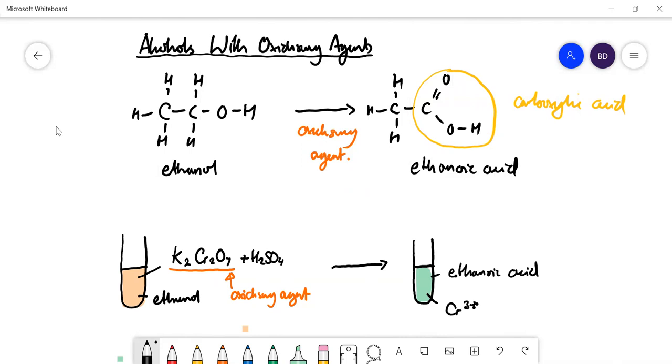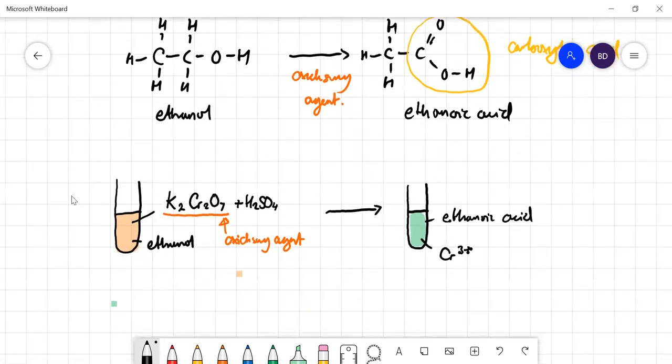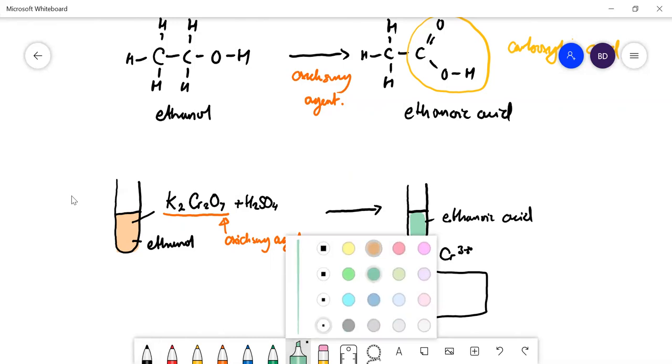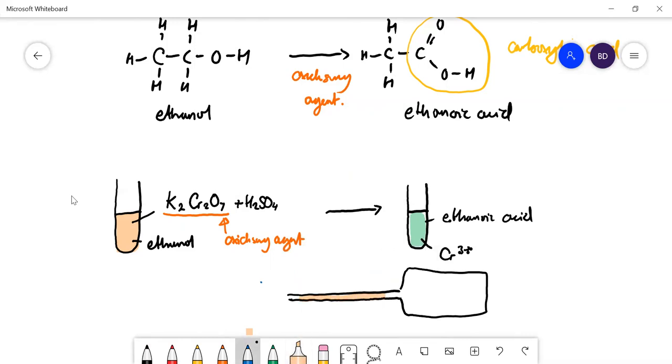You get a color change from orange to green. This used to be the basis of the old breathalyzer test for alcohol. There was a tube with a bag on the end - you had to blow enough air to fill the bag, two liters or whatever. Inside there was a jelly with orange dichromate in there. You blow air through, and if there's alcohol in your breath it would react with the potassium dichromate and start turning it green. The more alcohol in your breath, the further that green would go along the tube and indicate you had alcohol in your breath because you've got alcohol in your blood.